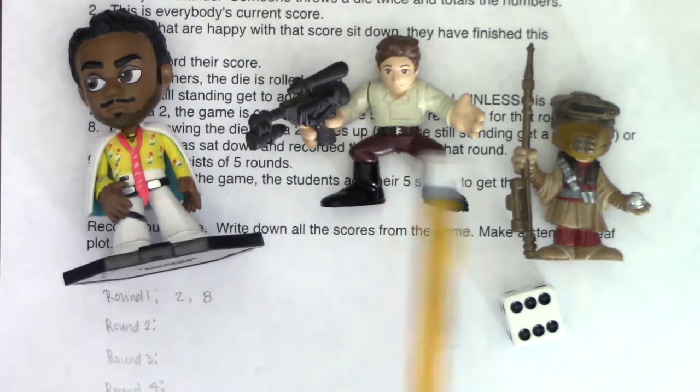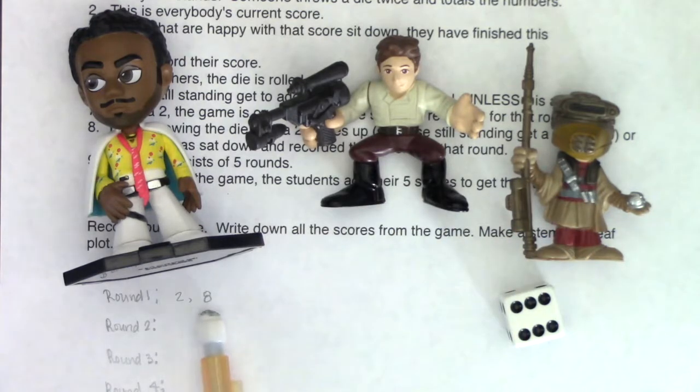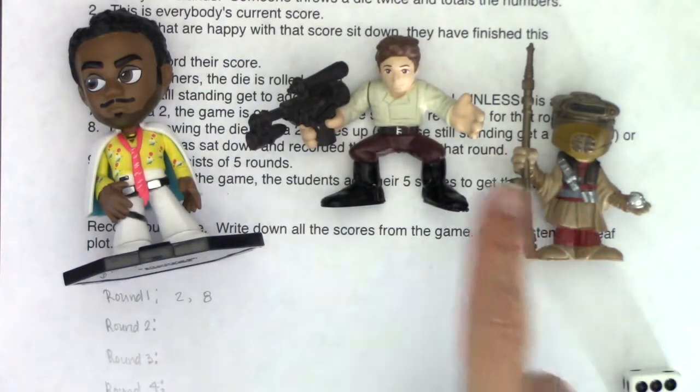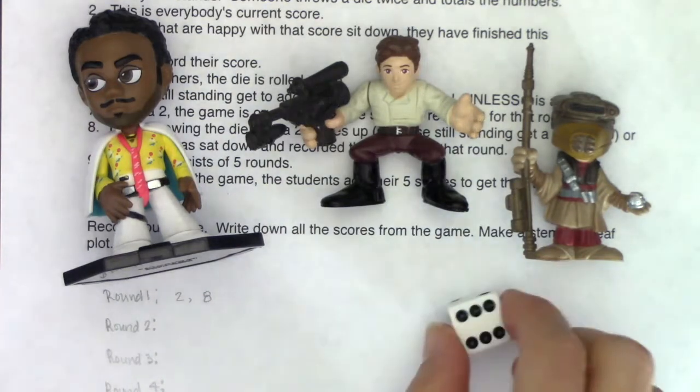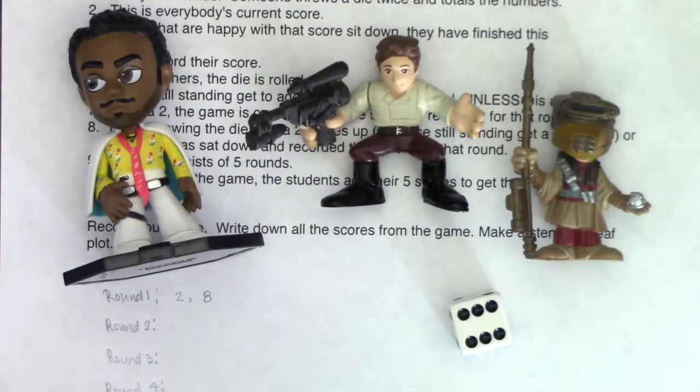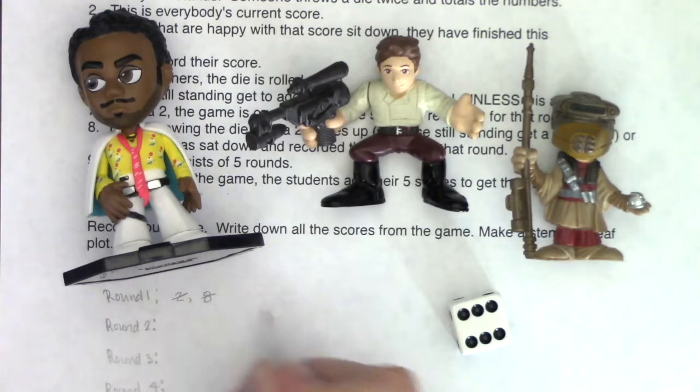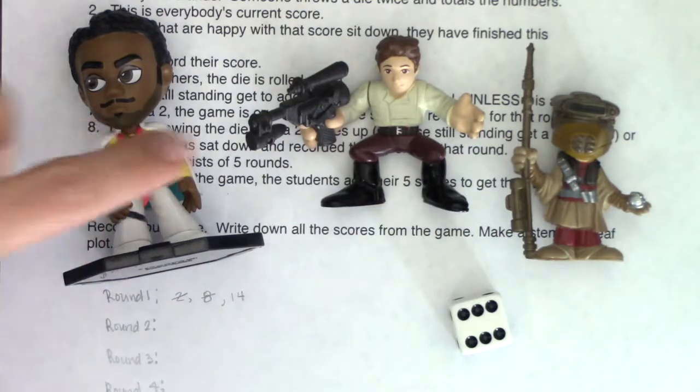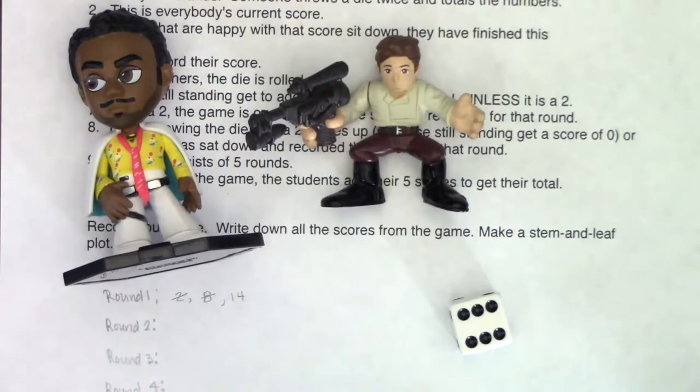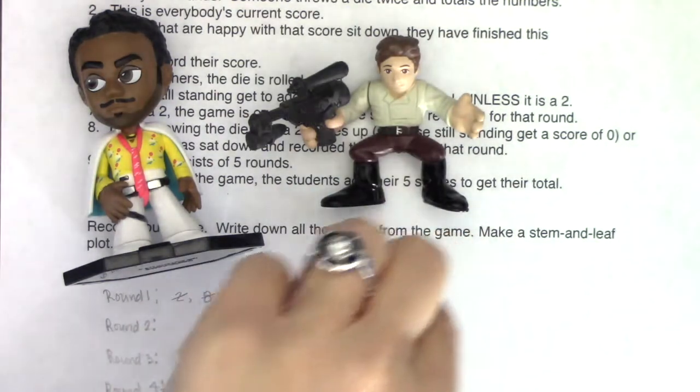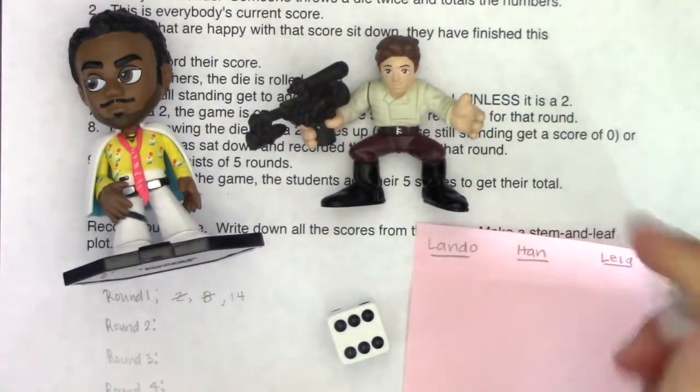So now Lando, Han, and Leia, they could sit down and write eight down for their round one score. And if they do, great. And if they're greedy, they stay standing. So the three of them are saying, well, eight isn't too much. I'm going to stay up for at least another round. So I rolled another six. So the round one score, let's do eight plus six. It's currently up to 14. Now Han and Lando are gamblers. Leia has some sense. So Leia is going to sit down. And I'm going to record Leia's score here. Leia for round one earned a 14.